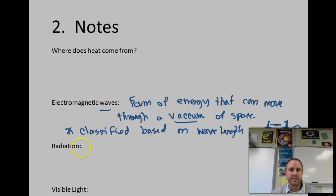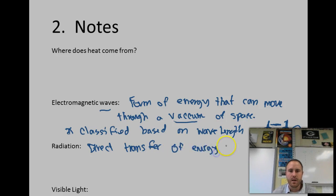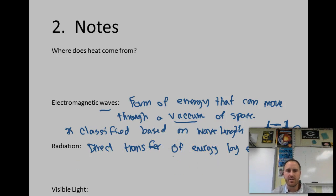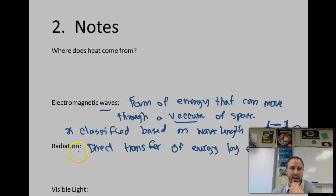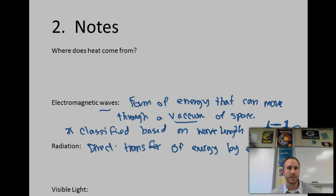Another part of electromagnetic waves is the idea of radiation. Radiation is the direct transfer of energy by electromagnetic waves. You feel radiation all the time — in the summertime, if you step outside and feel the sun coming down on you and say 'boy, it's warm,' that's a form of radiation. It's the electromagnetic waves directly transferring energy to you. If you pick up a pan that has been heated up, you can feel the transfer of energy from the stove to the pan to your hand — that's another example of radiation.